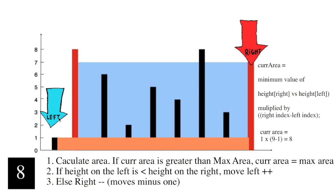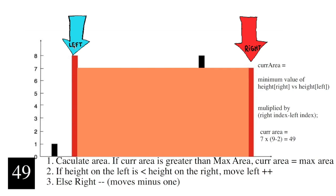The second thing we do is look at the height on the left, which is 1, and the height on the right. Since the left value is less than the right value, we move the left index up one. Now we calculate the area again. The minimum value of the height is 7 in this case — it's the right value because left is 8. We multiply it by the right index minus the left index: 9 minus 2. So that's 49. 49 is larger than our previous value, so we set max area to 49.